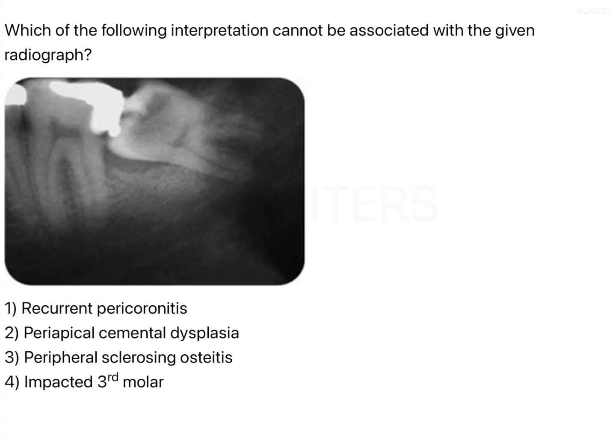In addition, if you notice this region in the radiograph, there is a radiolucency just below the crown. This is an indication that — ignoring everything else for now and looking at the options — we can identify for sure that this is an impacted tooth.